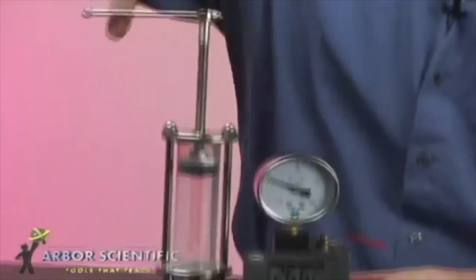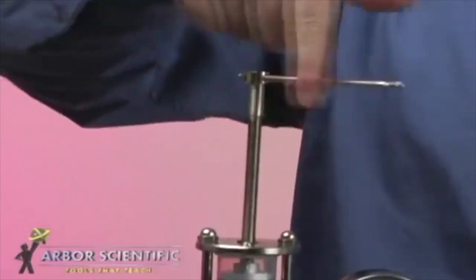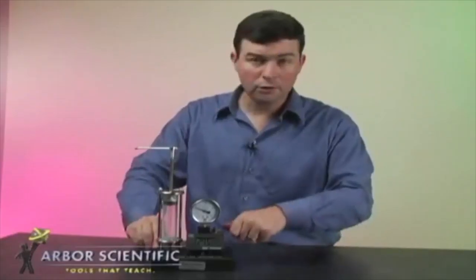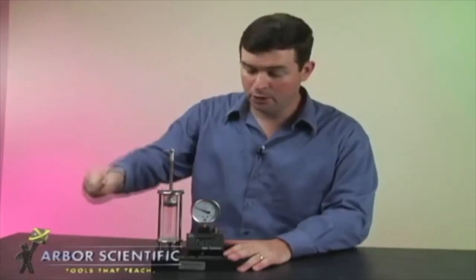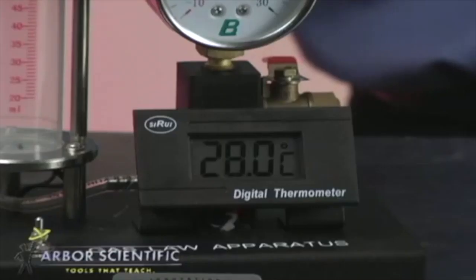Begin by opening the valve. Turn the piston so that the gasket is at a high volume. Close the valve and turn the piston to decrease the volume by at least 5 milliliters. Record the initial pressure, temperature, and volume.